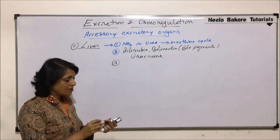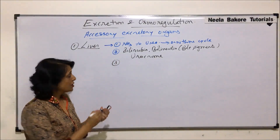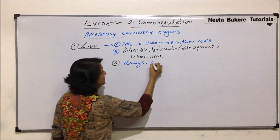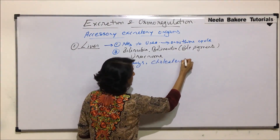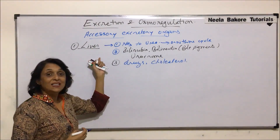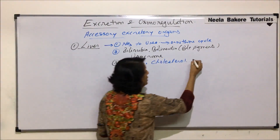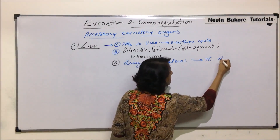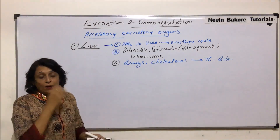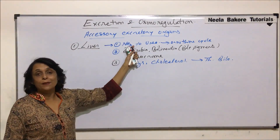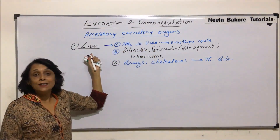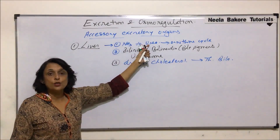There are also certain drugs and cholesterol — these substances are also eliminated by liver through bile. All these things which are harmful — for example, ammonia — are converted into less harmful substances and then eliminated. Liver is the site where this conversion takes place.